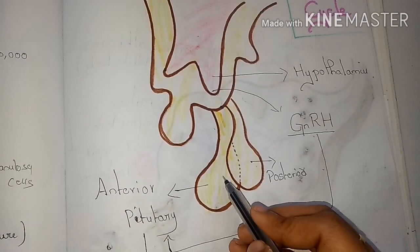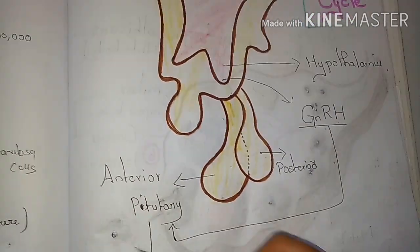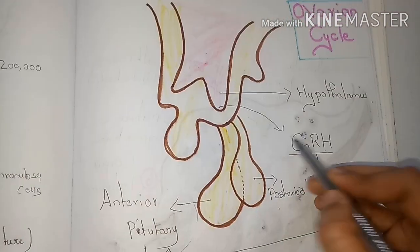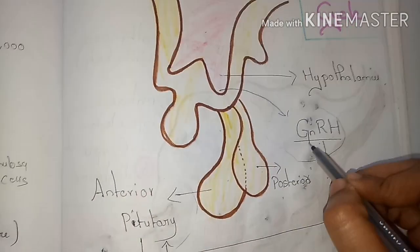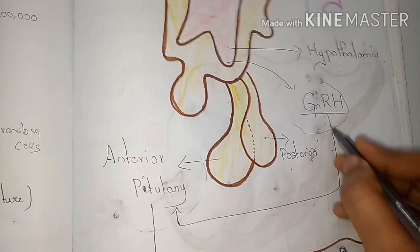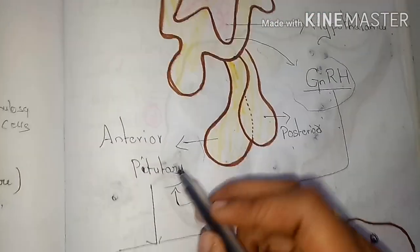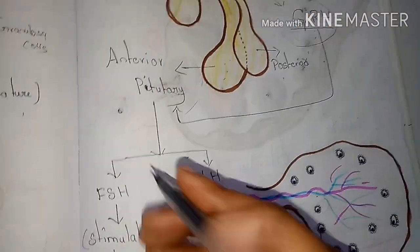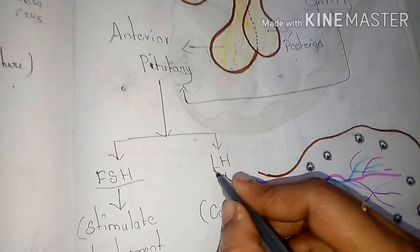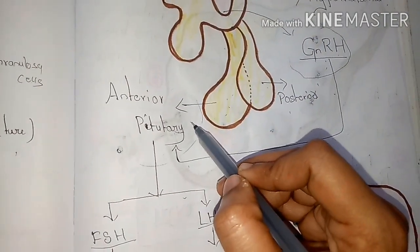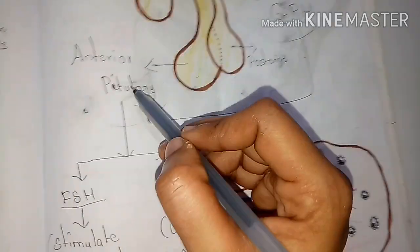The pituitary gland has two portions: one is designated as the anterior pituitary and one as the posterior pituitary, based on their position. When the gonadotropin-releasing hormones are liberated from the hypothalamus, they activate the anterior pituitary gland to liberate two hormones — the follicle stimulating hormone (FSH) and the luteinizing hormone (LH).